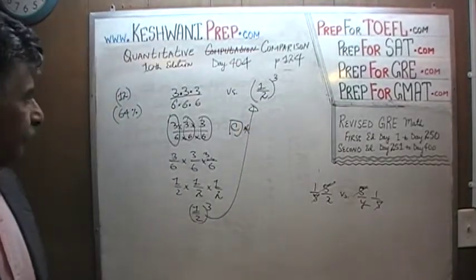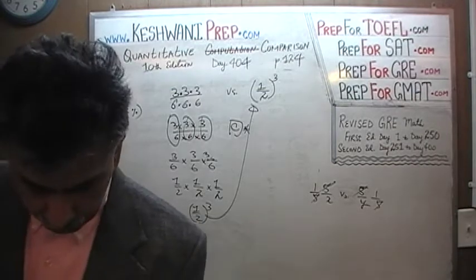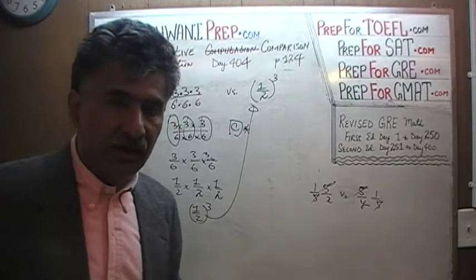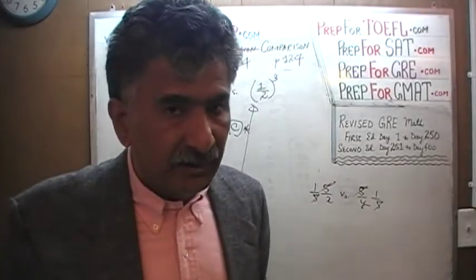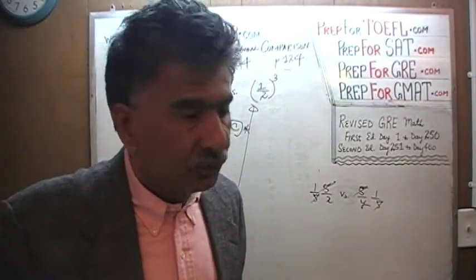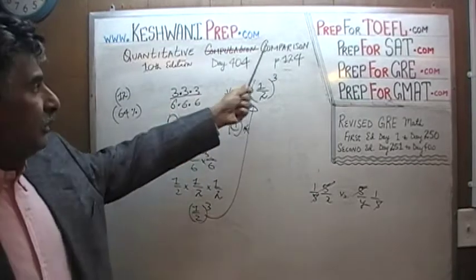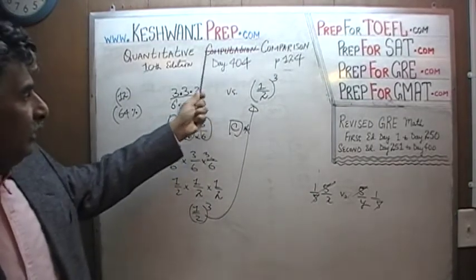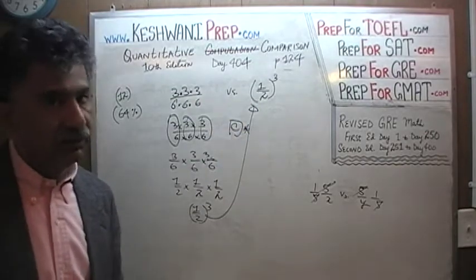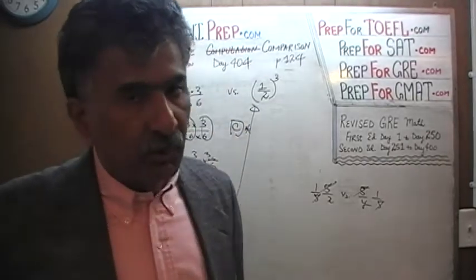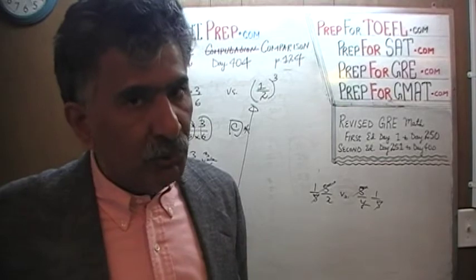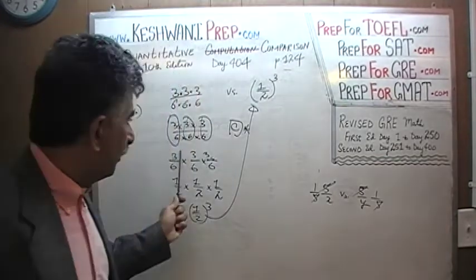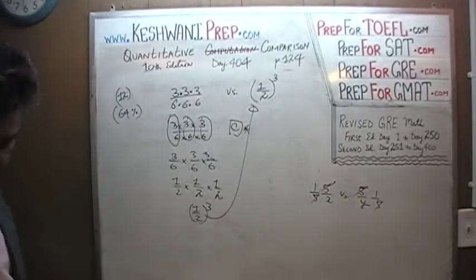The answer to this problem is C. Do not waste your time doing everything out — that's where people spend their time, and that's the part most people do not understand. These questions are called quantitative comparison, which is why I make a point of writing down the word 'computation' and crossing it out for emphasis. These questions are not called quantitative computation. Do not waste your time computing every single thing you see. Compare the things.